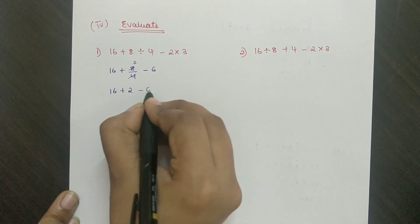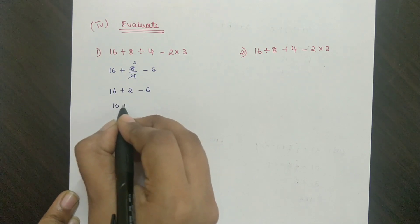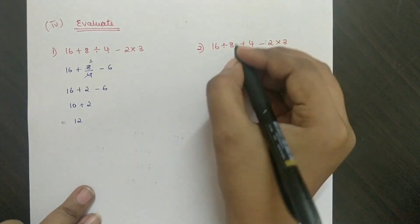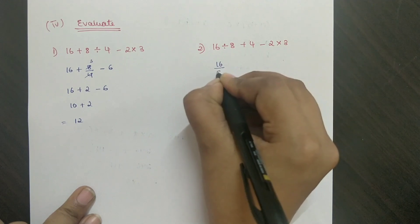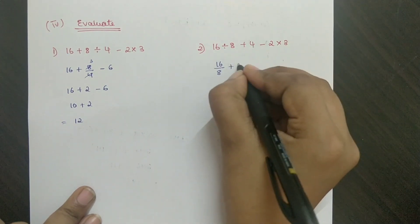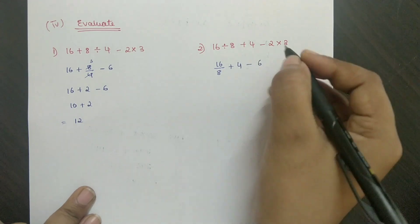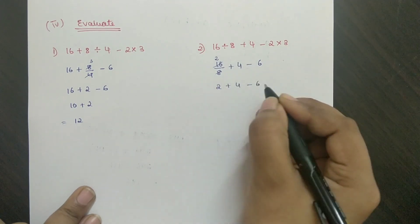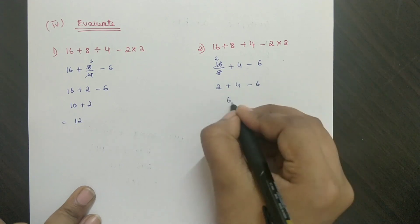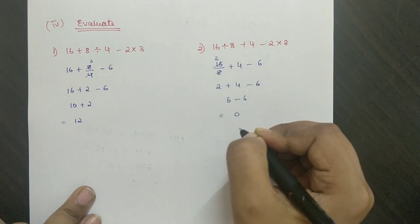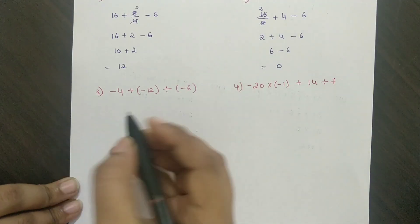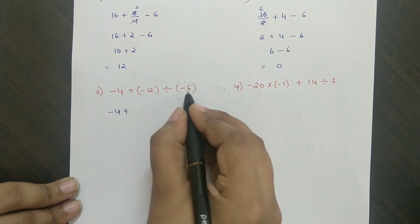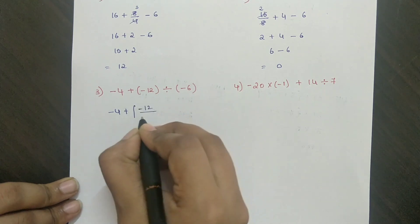Second question: 16 by 8 can be written as 2, plus 4 minus 3 to 6. So 2 plus 4 minus 6 equals 4 plus 2 equals 6, minus 6 equals 0.